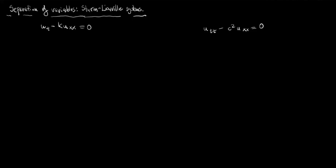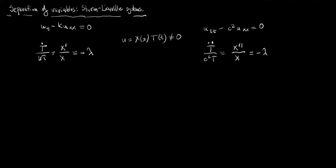We considered the heat equation or the wave equation, and we looked for solutions in terms of a function u which is a product of a function of x and a function of t, insisting the solution was not identically zero. When we inserted this ansatz into the PDE, in both cases we obtained that a certain ratio must equal a constant, negative lambda. In particular we found a second-order ODE which X must satisfy: X double prime plus lambda X equals zero.